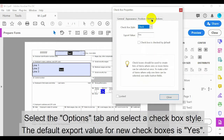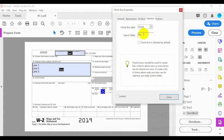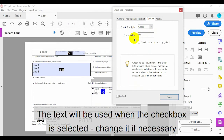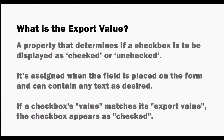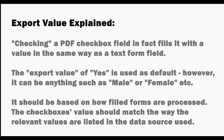Select the Options tab and select the checkbox style. The default export value for new checkboxes is Yes — this text will be used when the checkbox is selected. Change it if necessary, and match this value accordingly in the data source. The export value is a property that determines if a checkbox is displayed as checked or unchecked. If a checkbox's value matches its export value, the checkbox appears as checked.